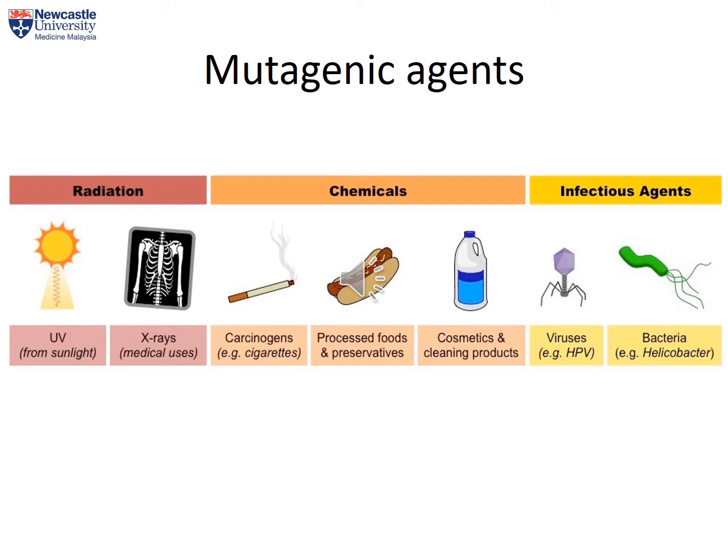For radiation, it could be UV wavelength from sunlight or x-ray radiation from the use of medical devices. As for the chemical mutagenic agents, you get carcinogens such as the chemicals released from cigarette smoke, or chemicals used in processed foods such as preservatives in sausages, or chemicals that we use in cosmetics and cleaning products. As for the infectious agents, it could be either viruses or bacteria that are capable of altering our DNA sequences within the cell.